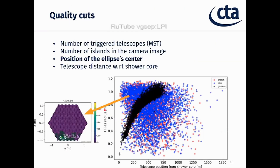To identify those telescopes, we apply some quality cuts. The first two are based on the number of triggered telescopes and the number of islands in the camera image — these are the clusters of pixels formed in the image. We also take into account the position of the center of the ellipse in the camera, and the telescope position with respect to the shower core. In this plot, the vertical axis shows the Hillas radius — the position of the center of the ellipse in the camera, where zero means the center and 1.2 means the border.